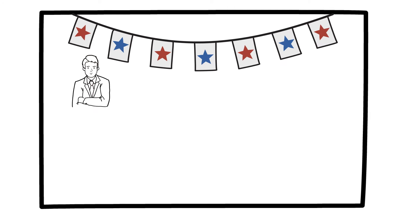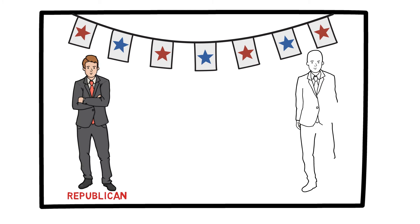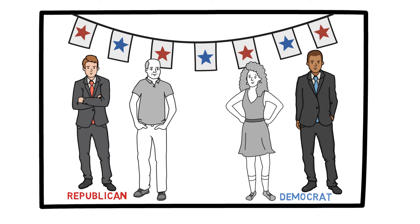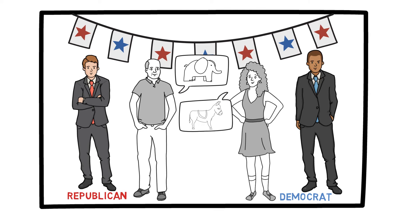For example, consider a debate during a presidential election in the United States. There is a Republican candidate and a Democratic one. Let's say two people, one Democrat and one Republican, watch the same debate, but afterwards have different opinions on which candidate performed better. The Republican viewer thought the Republican candidate did better and the Democratic viewer thought the Democrat one. This is another example of confirmation bias at work — the viewers are affected by confirmation bias in interpreting the information they receive.